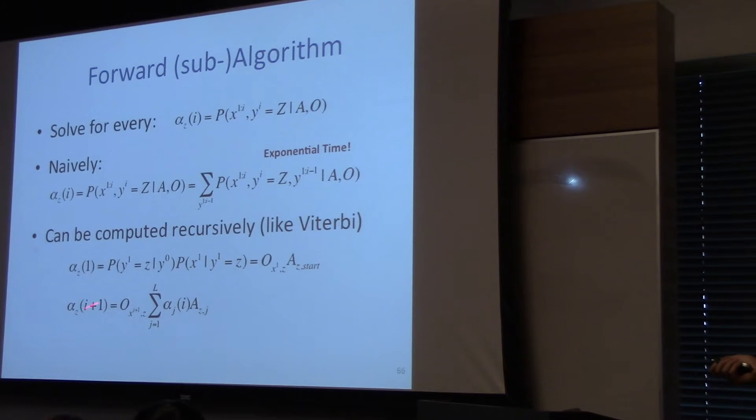So it turns out that alpha, and this is actually what you have to implement, alpha sub z of i plus 1 is equal to the observation matrix times this.